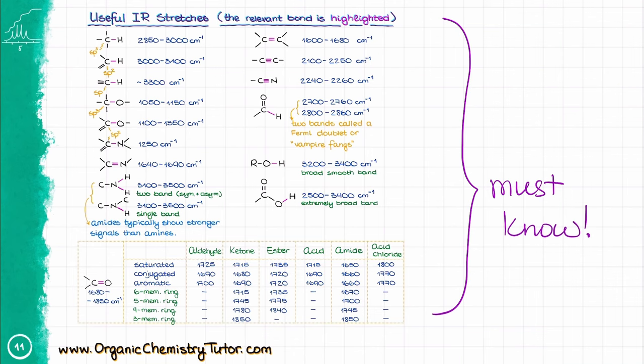With time and practice, you'll learn to recognize all of these functional groups and will memorize most of these numbers as well. You'll also be able to recognize some signals in the fingerprint region, but unless you are comfortable with the analytical region first, which is above 1500 reciprocal centimeters, don't even poke your nose into the fingerprint.